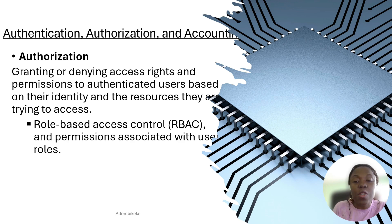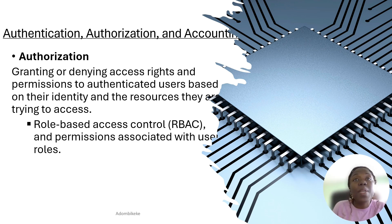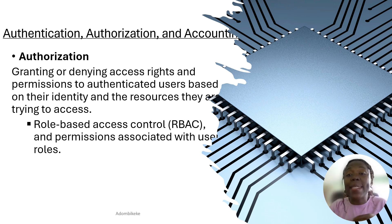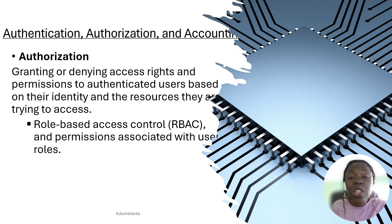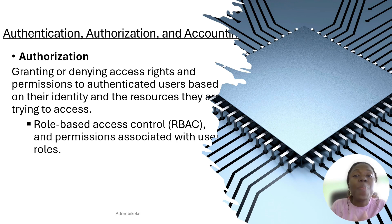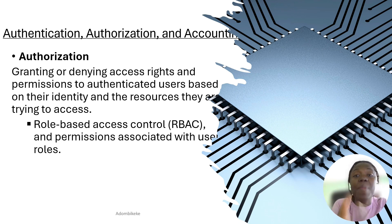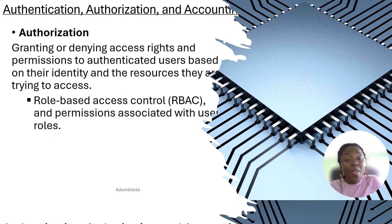Permission associated with user roles is the same as role-based: you give people access and permissions based on their roles. At the hospital, even though you've shown your badge and authenticated at the door by scanning it, there are rooms you are not able to enter. When I go into the ICU, I would have to authenticate again and have a very good reason — certain doors are locked for just patients, doctors, nurses, and caretakers. That's authorization: making sure that even though people have authenticated, not everything is given to them.